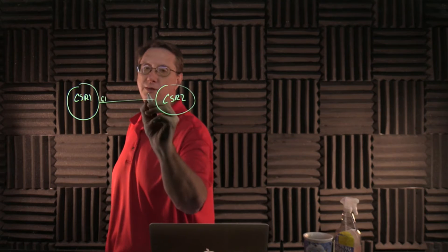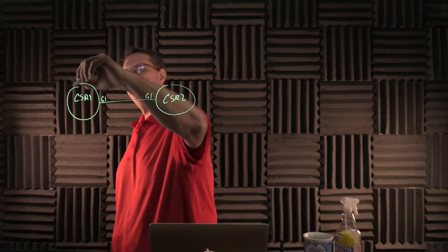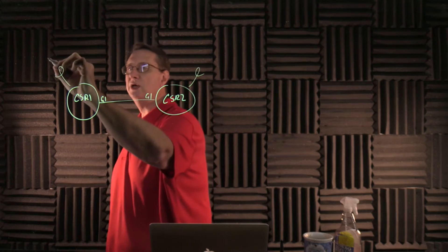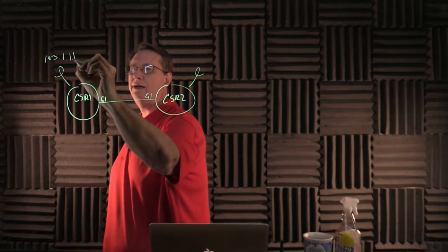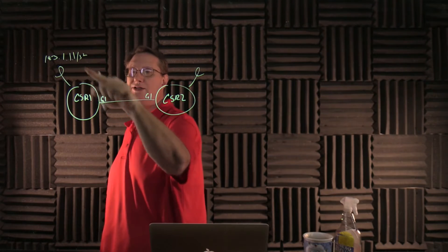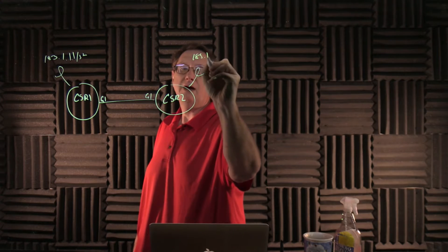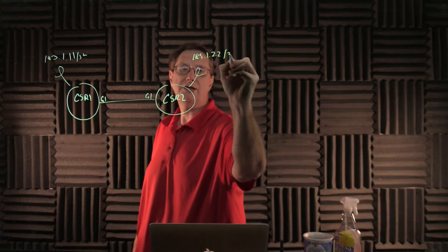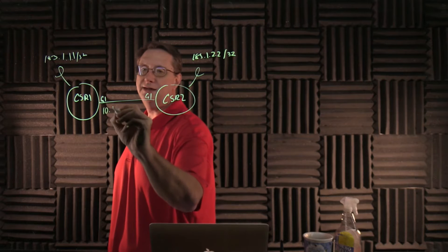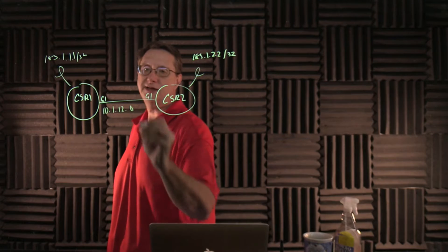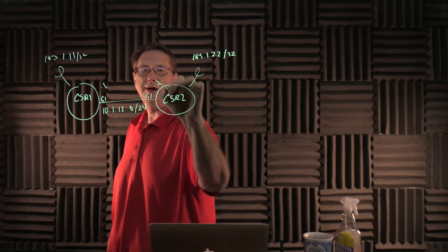Now we're going to use Gigabit 1 on both ends between these devices, and we're going to configure loopback interfaces. It'll be 183.1.1.1 slash 32 for CSR1 and 183.1.2.2 slash 32 for CSR2. The network between these devices will be 10.1.12.0 slash 24, and we'll use .1 and .2 on either side.